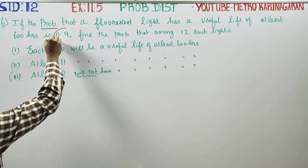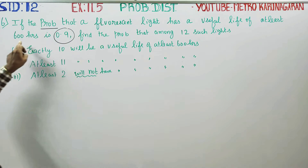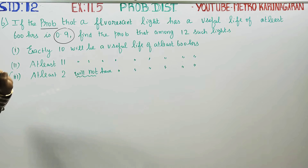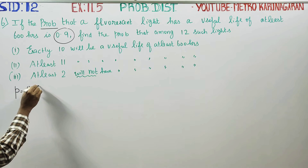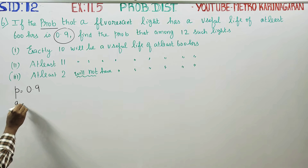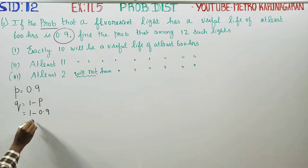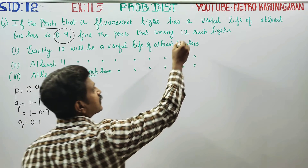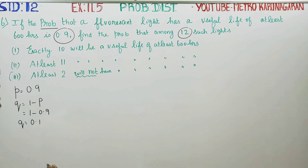The probability of success P is equal to 0.9. Q is 1 minus P, that is 1 minus 0.9, so Q equals 0.1. How many bulbs will be experimented? 12 bulbs will be experimented. Therefore n is equal to 12.